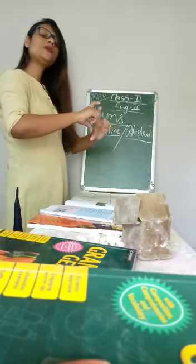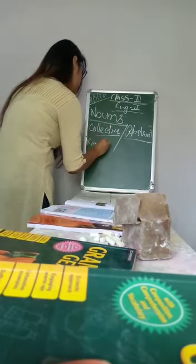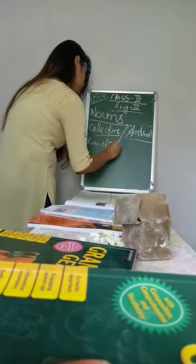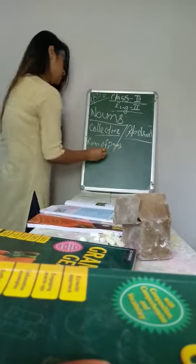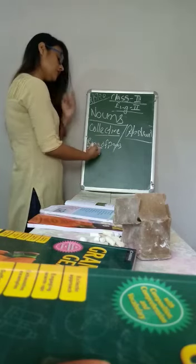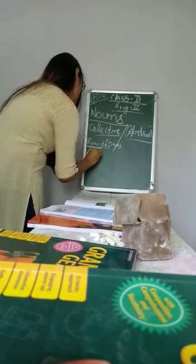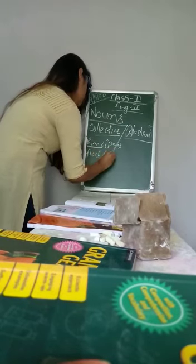Then lots of paper. Those are ream of paper. Ream of paper. So these words, they are collective noun. So this means in fact, it means group. Then, flock of sheep.